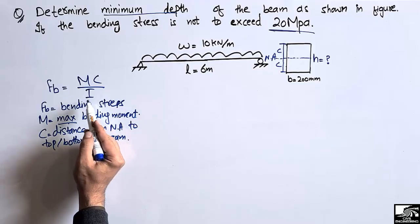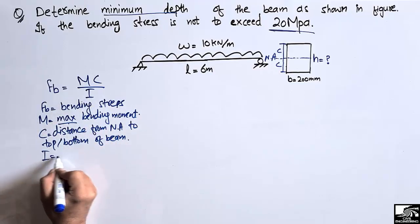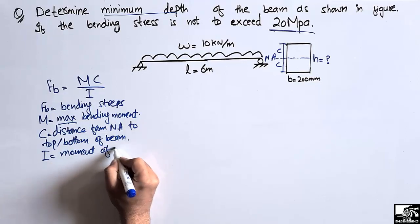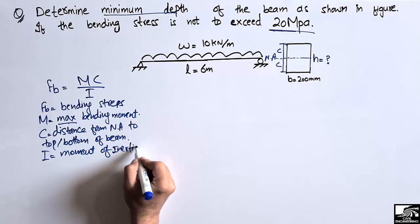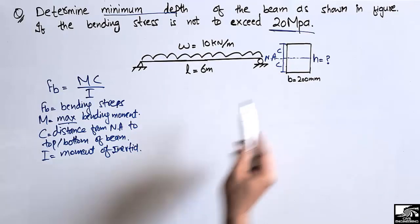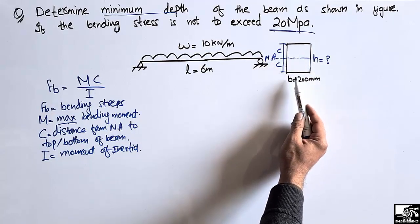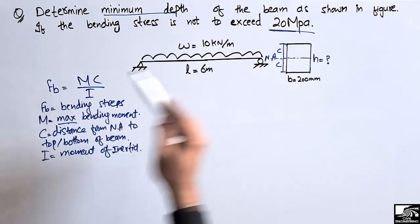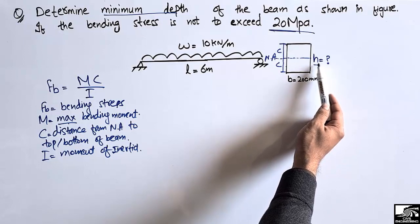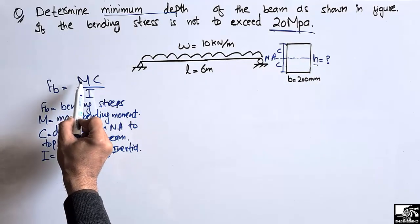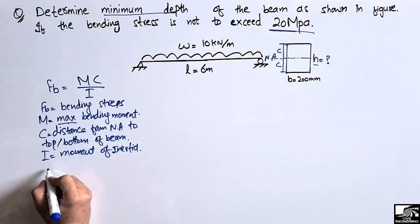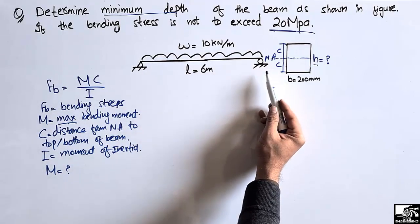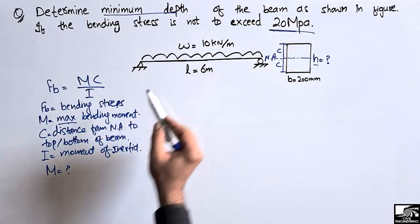I is simply the moment of inertia of the beam. By looking at the cross-section, it looks like a rectangular beam, so we can find the moment of inertia using the standard formula. Using the bending formula, we can find the H value — the minimum depth. First, we need to find the M value — the maximum bending moment for this simply supported beam.